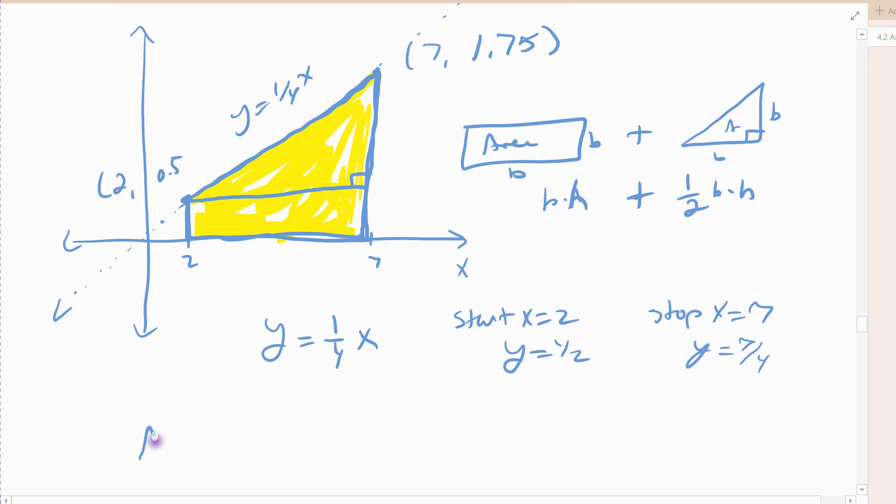All right, so area would be my rectangle's base times height plus my right triangle, which is 1 half its base times height. All right, so first the base and the height of my rectangle, and then the base, so I'll call it height 1, height 2. They're different, right? The height of my rectangle and the height of my triangle are different. The bases are the same, though. The base would be this distance here, which would be 7 minus 2, which comes out 5. So my base is a distance of 5.